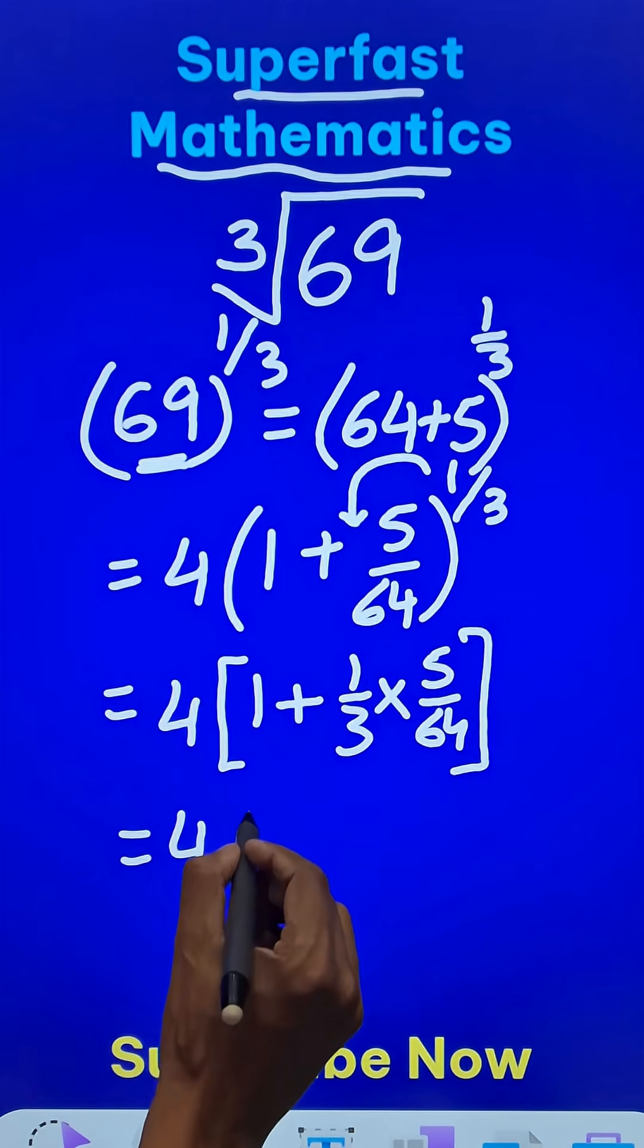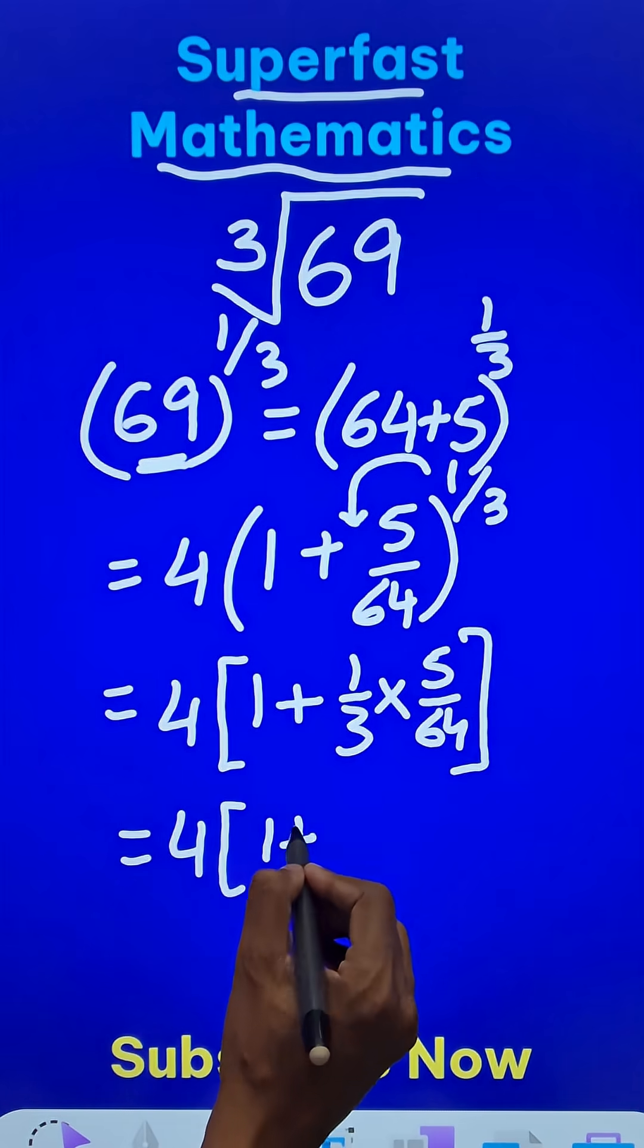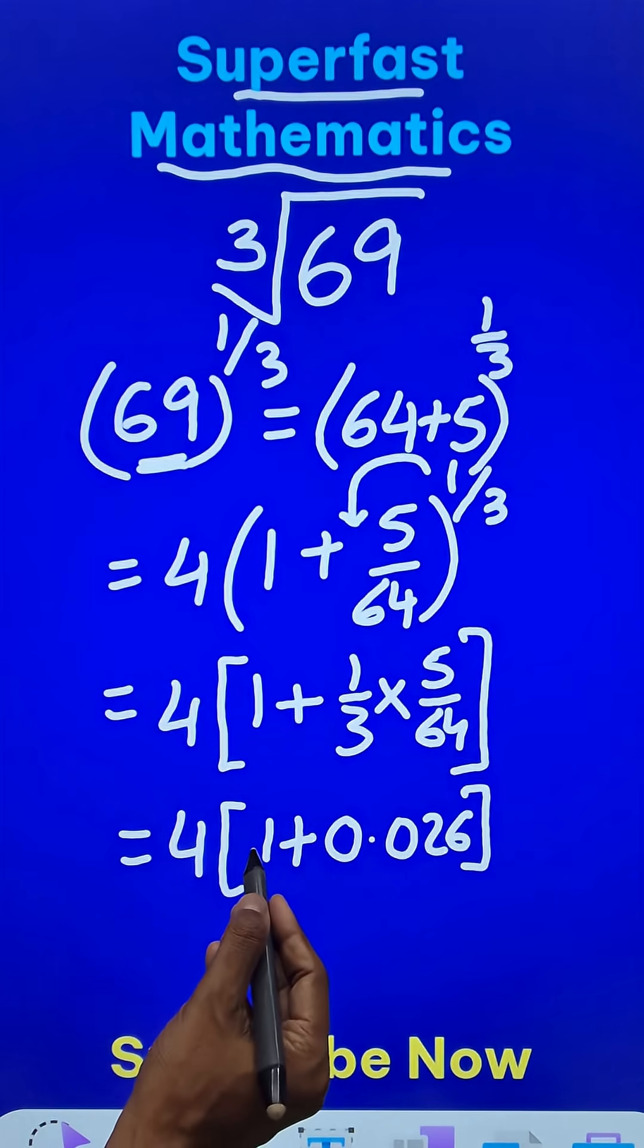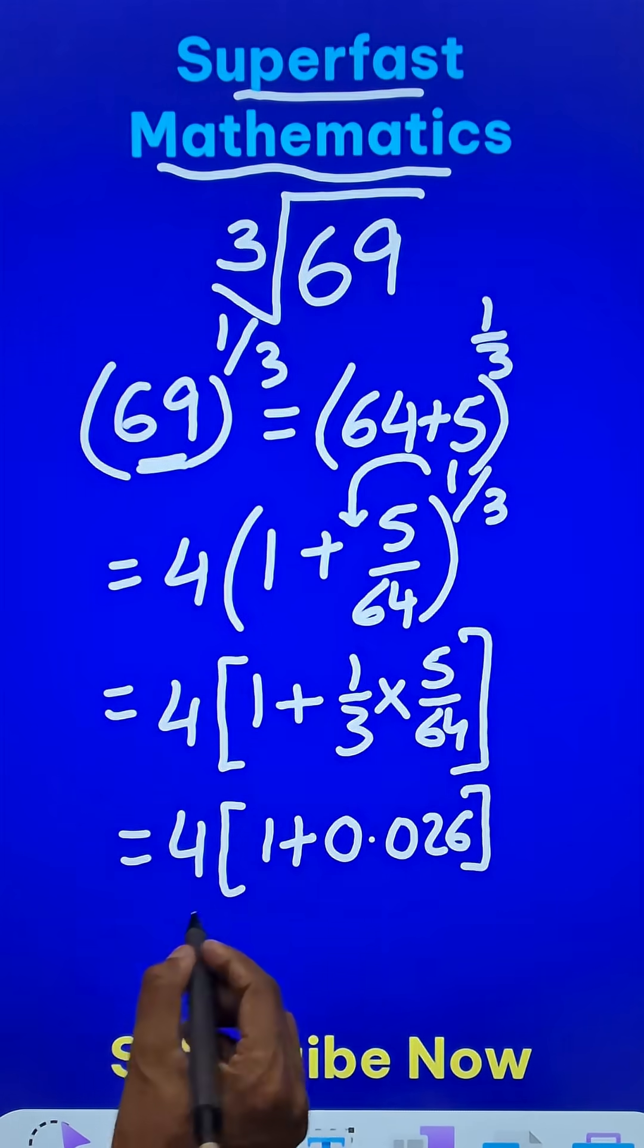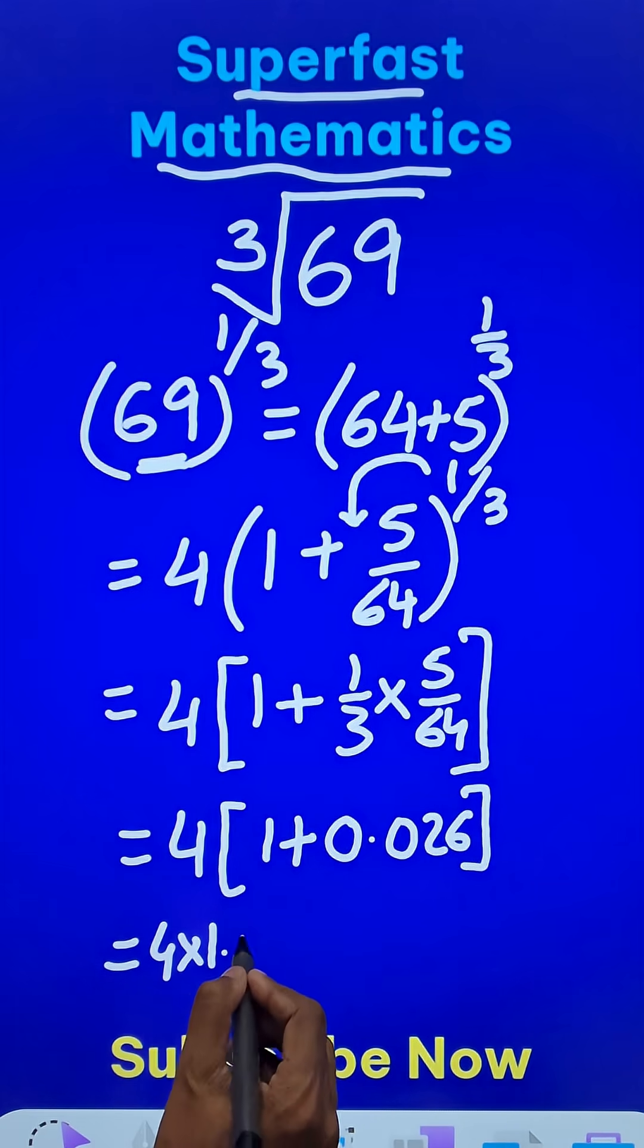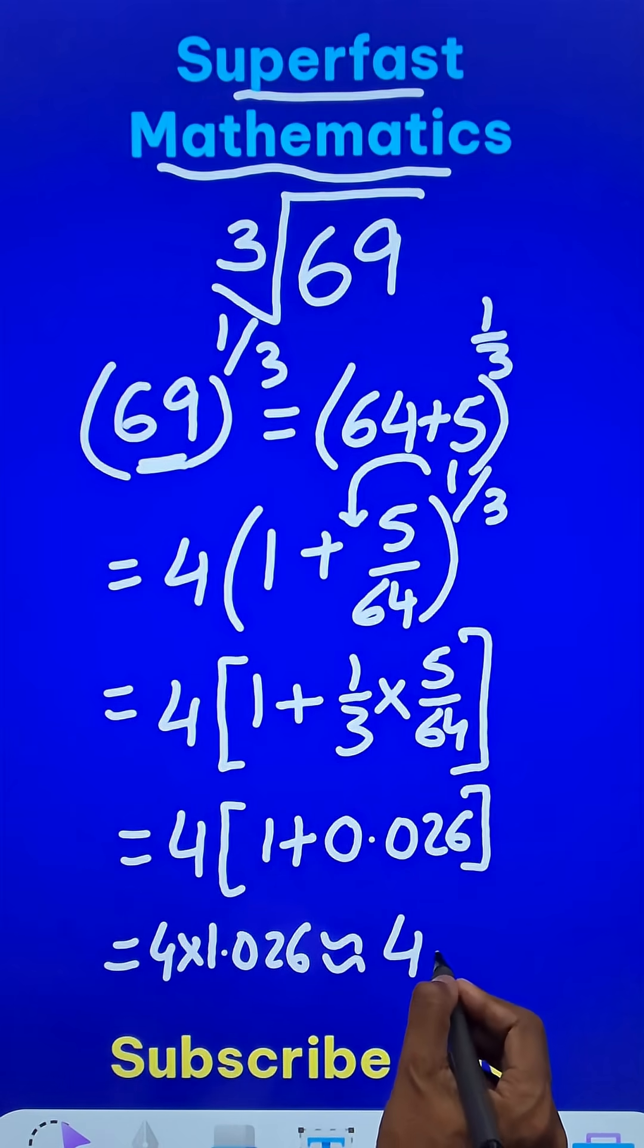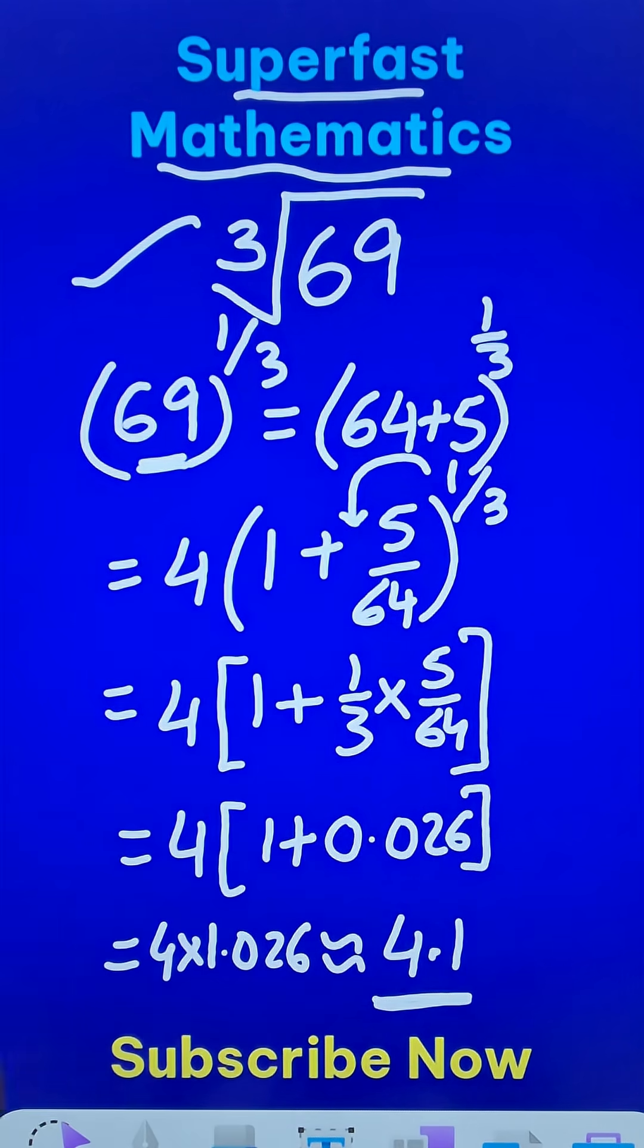So this is 1 plus, I think 5 upon 192 will give you approximately 0.026 and when you add it to 1, it will give you 1.026. So 4 times 1.026 will be approximately equal to 4.1 and that happens to be the approximate cube root of 69.